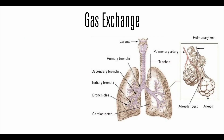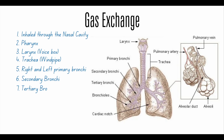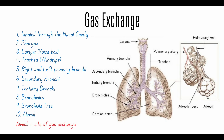Let's talk about how air reaches the lungs. Air is first inhaled through the nose, passes the pharynx, then the larynx (the voice box), then through the trachea (the windpipe), then through the right and left primary bronchi, secondary bronchi, tertiary bronchi, then the bronchioles, forming a bronchial tree. This terminal bronchial tree divides into respiratory bronchioles that have alveoli. The alveoli is where gas exchange occurs: oxygen diffuses into the blood, and carbon dioxide diffuses out as a waste product of cellular respiration.